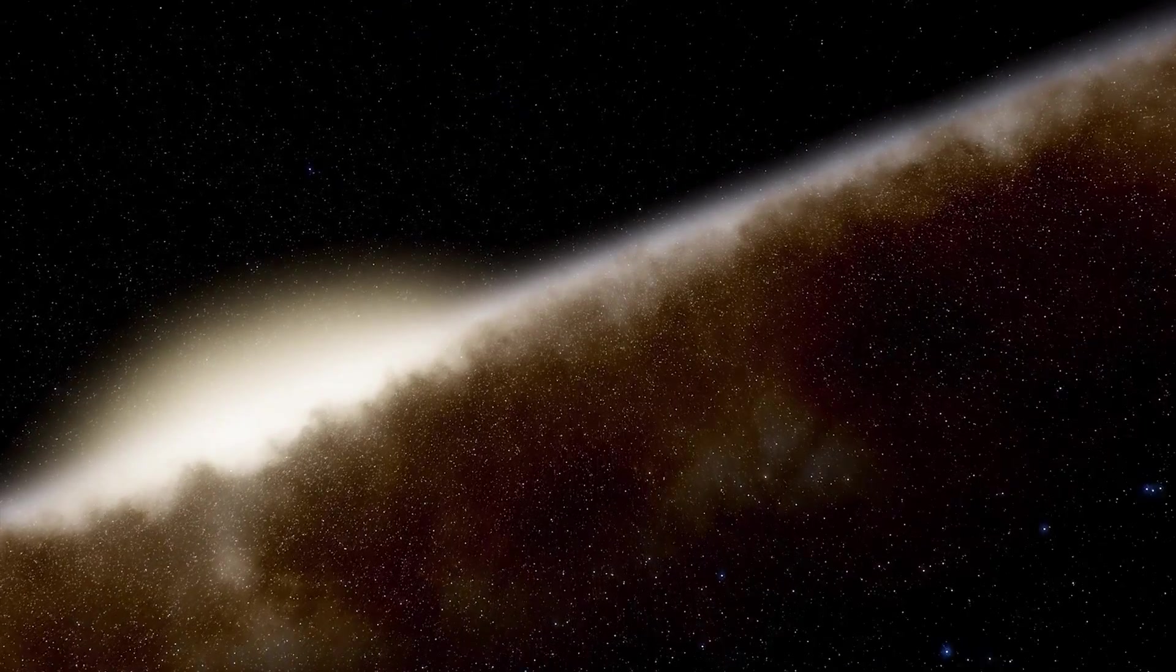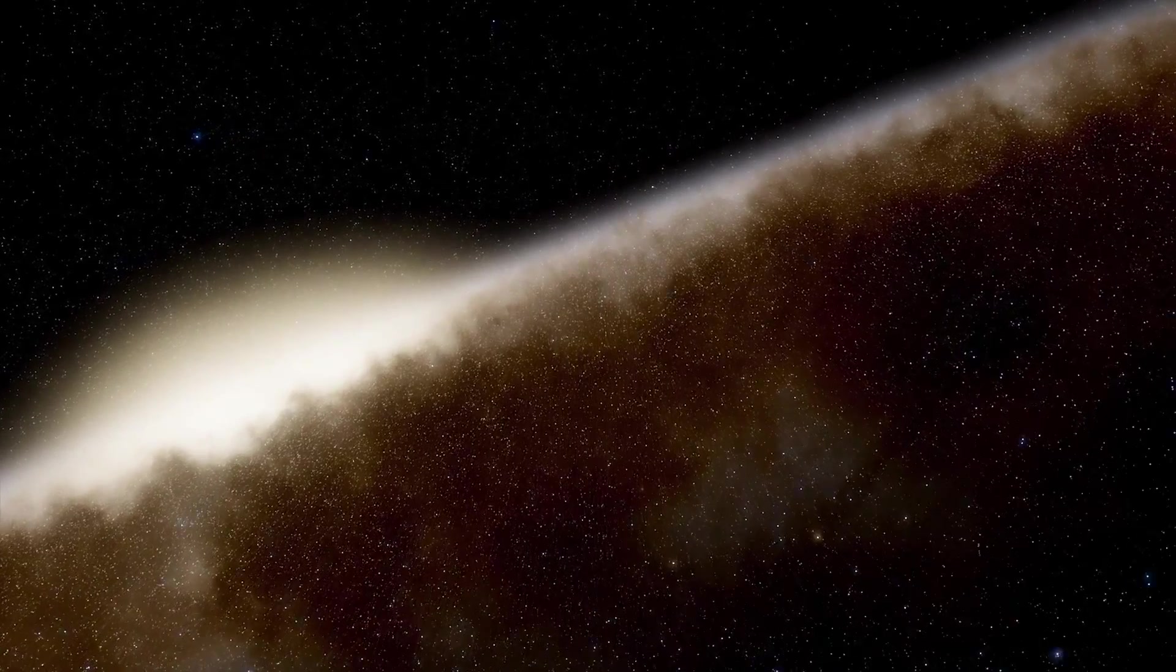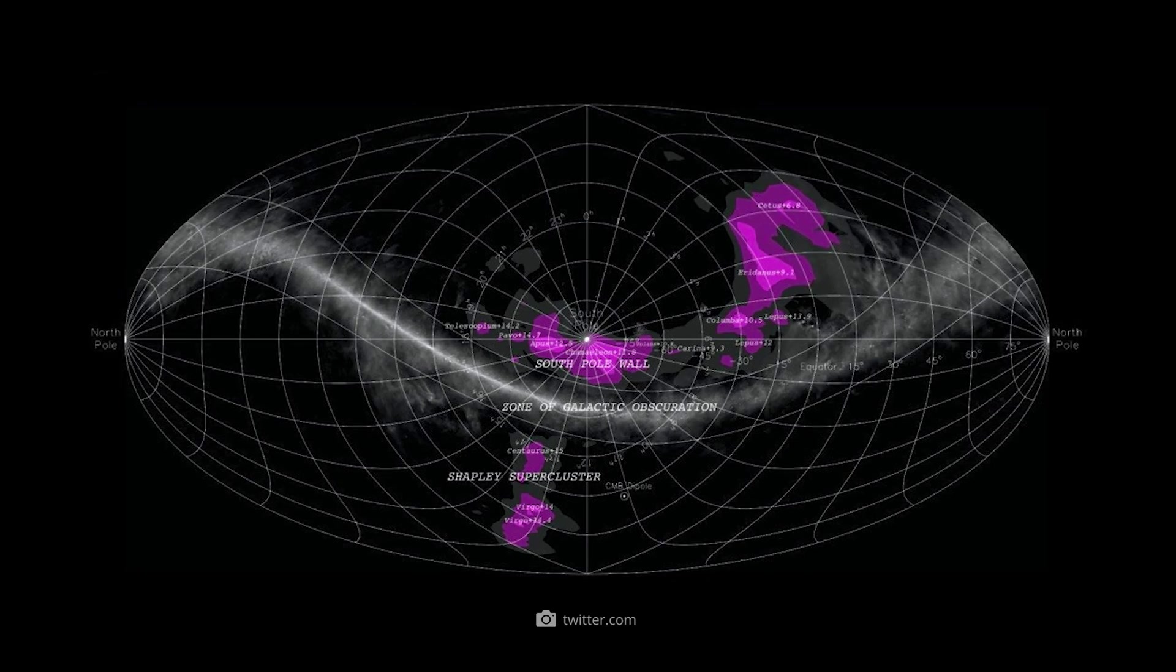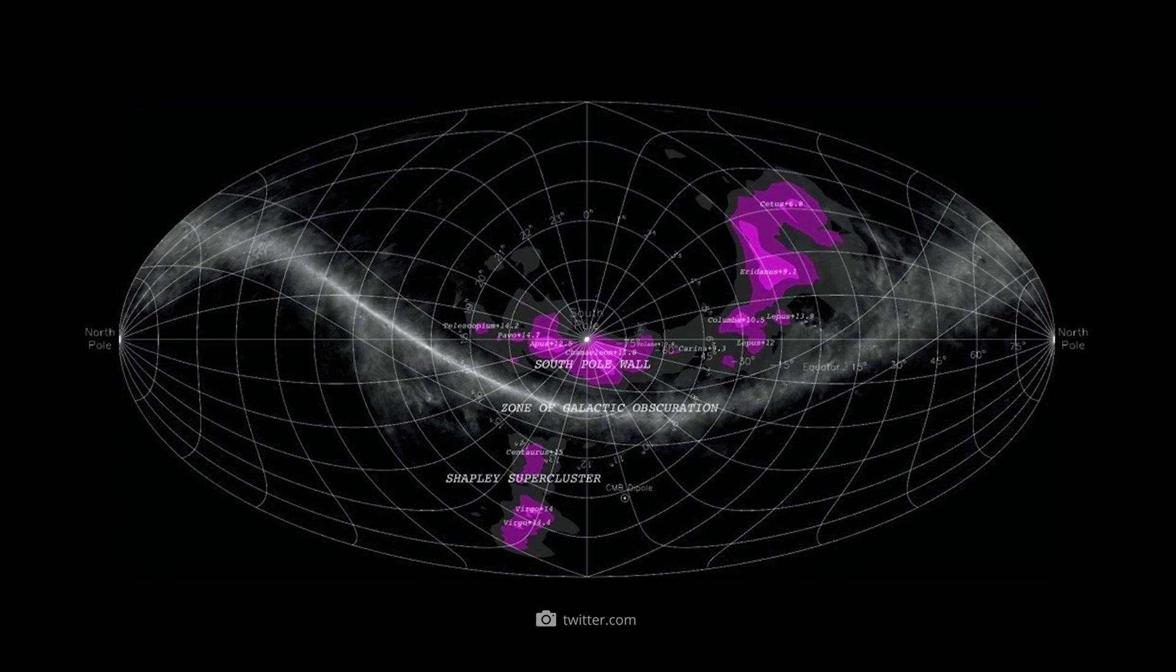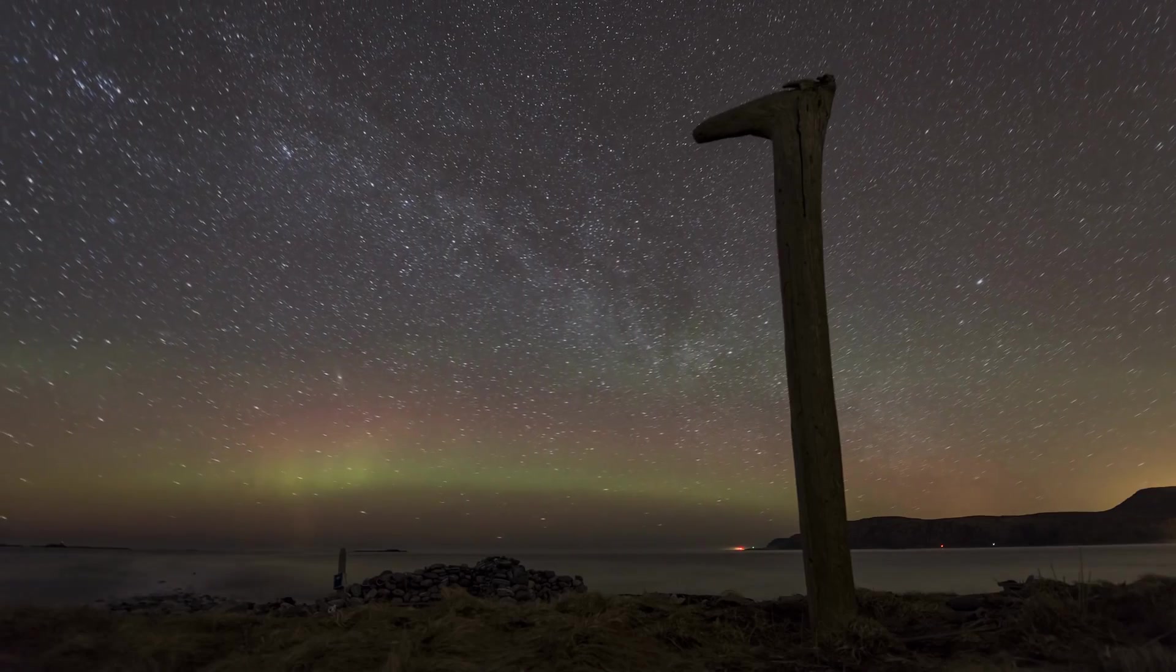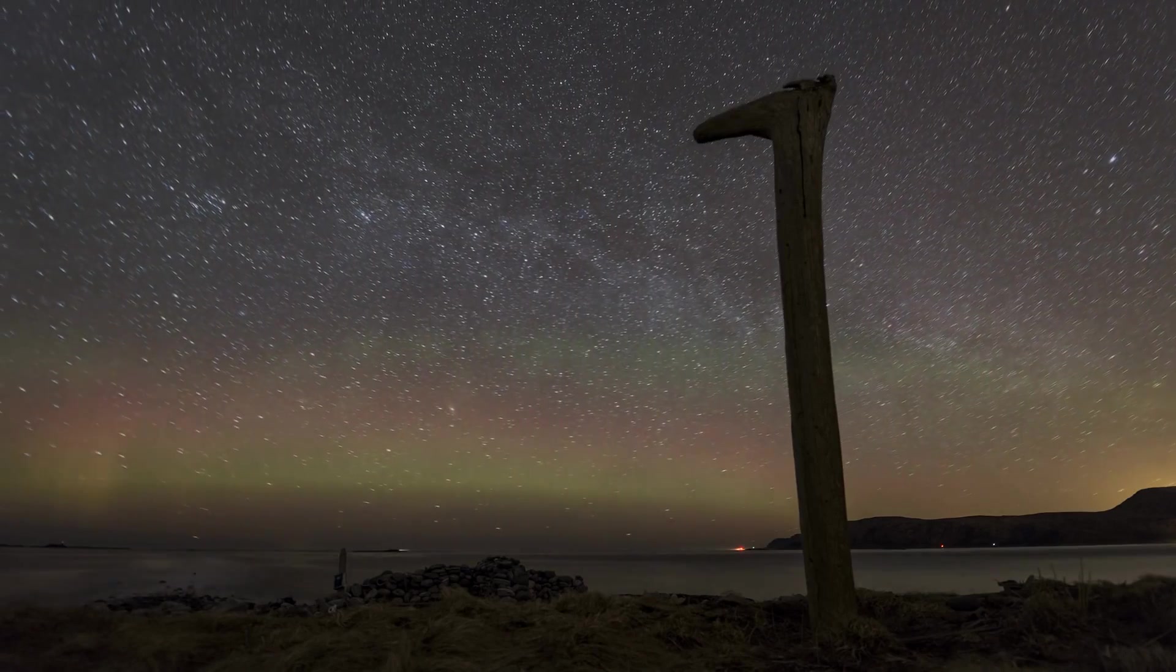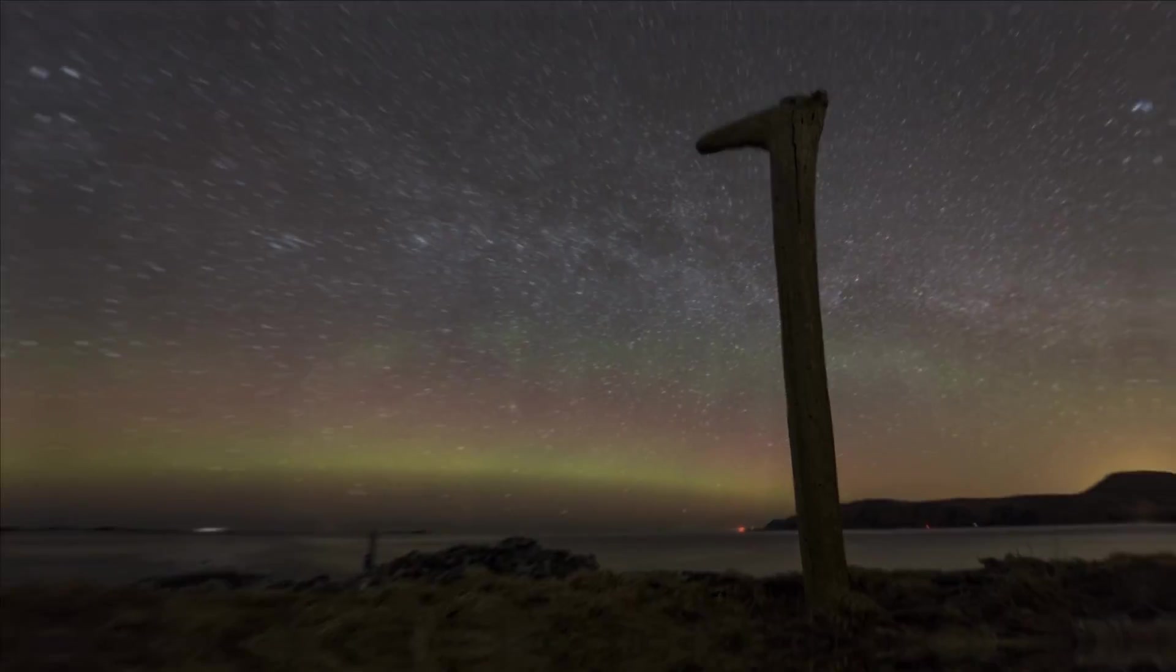Although there are larger structures, which have lengths of up to 9.7 billion light-years, the South Pole Wall is, with a distance of 500 million light-years, the cosmic giant structure closest to us. Why has mankind been able to discover this enormous cluster of stars only now, when it lies directly in front of our doorstep?